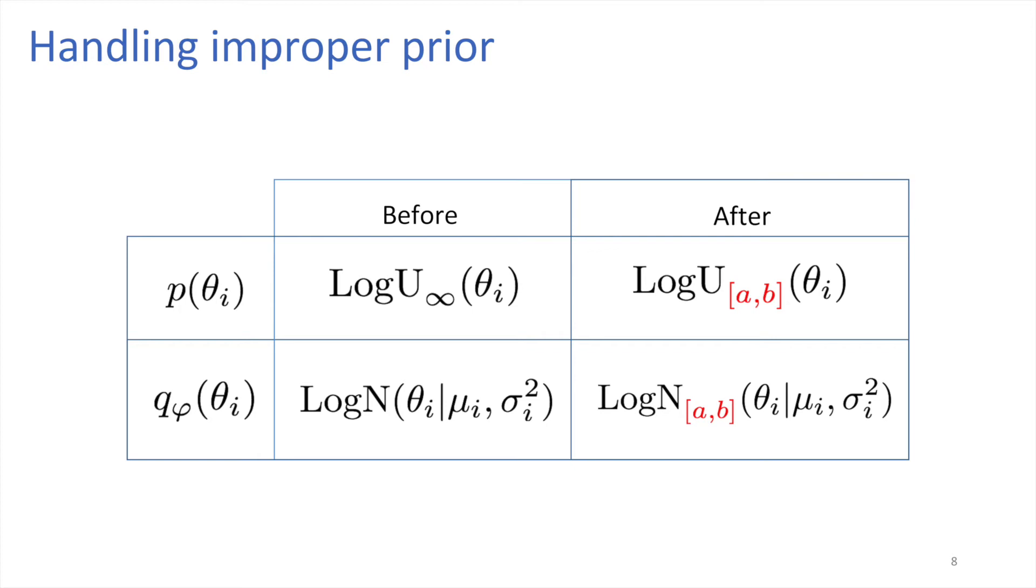This problem can be handled by truncation of prior distribution and variational distribution. Here we truncate both distributions to the interval from A to B. The truncated log-uniform prior distribution still retains its sparsity-inducing properties. However, the model now becomes proper.